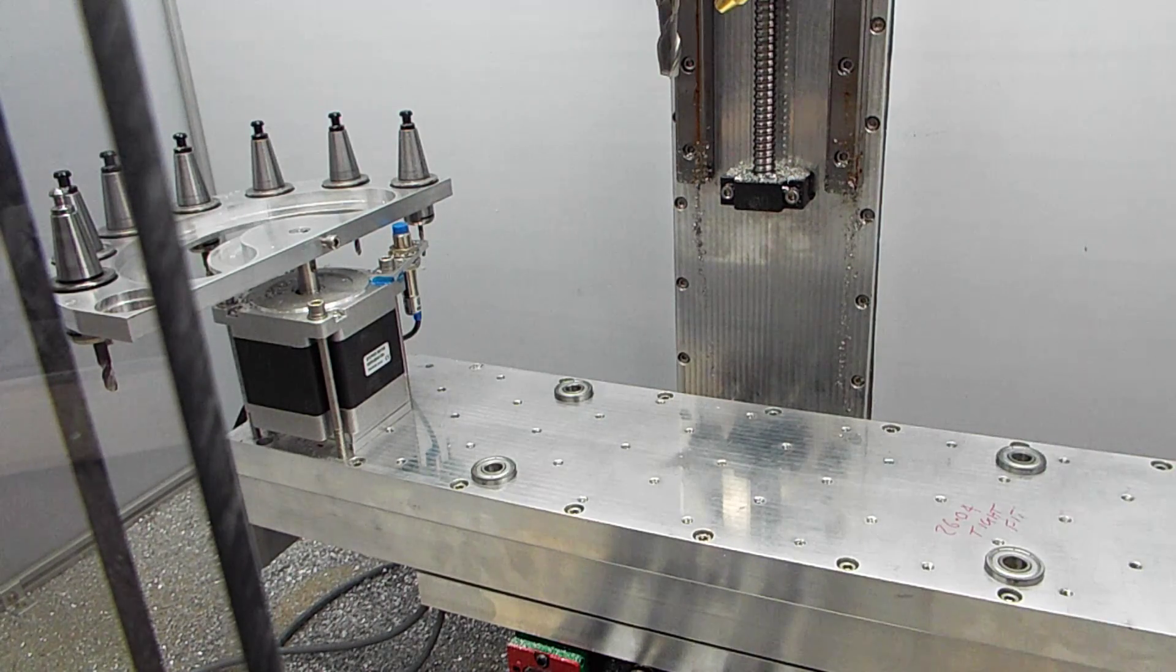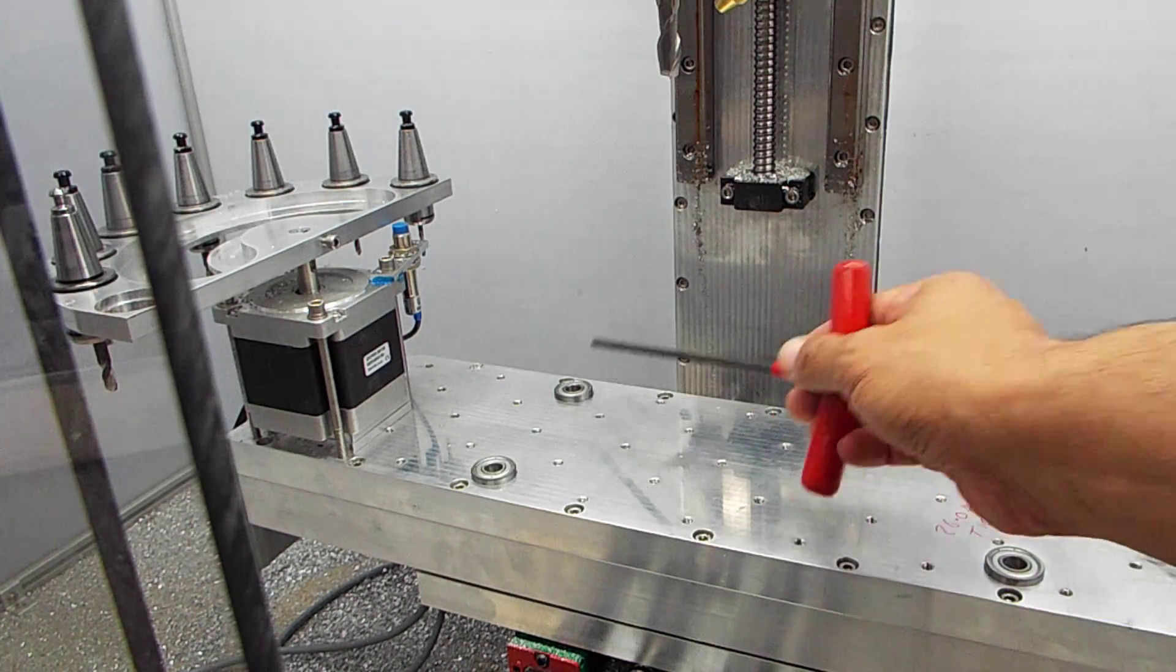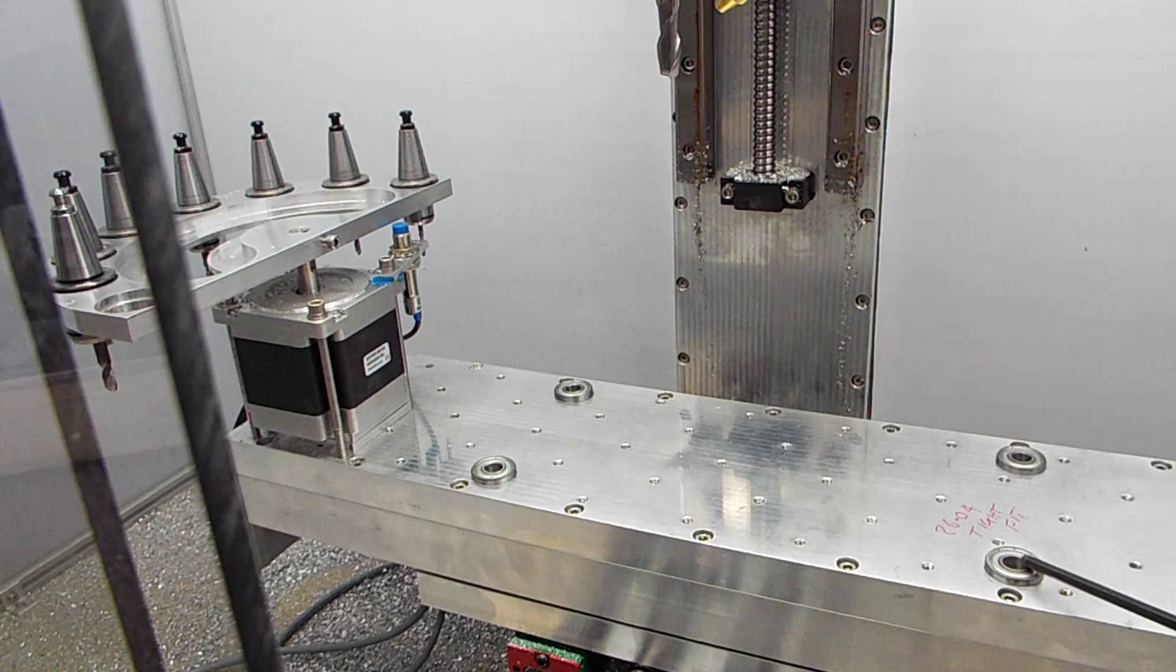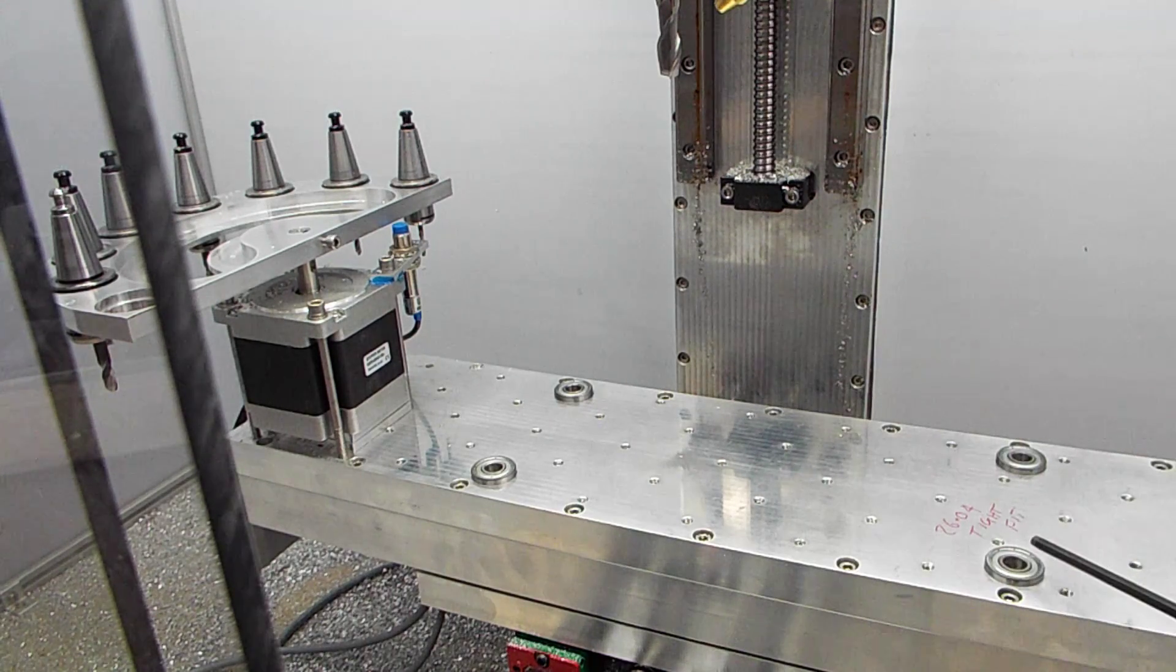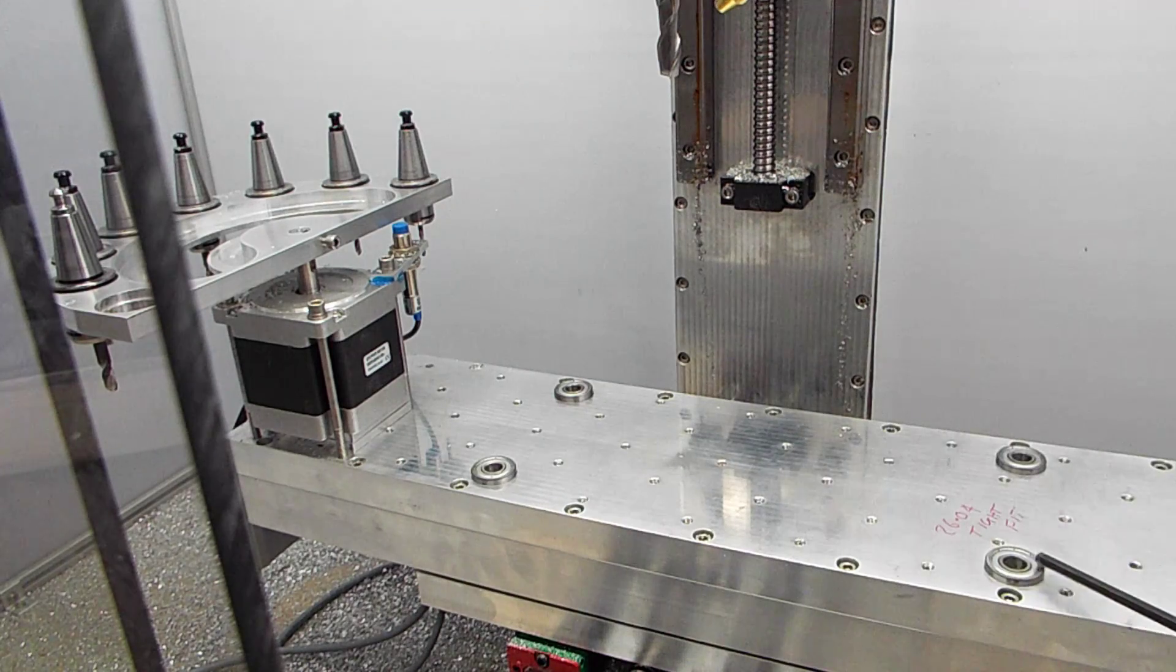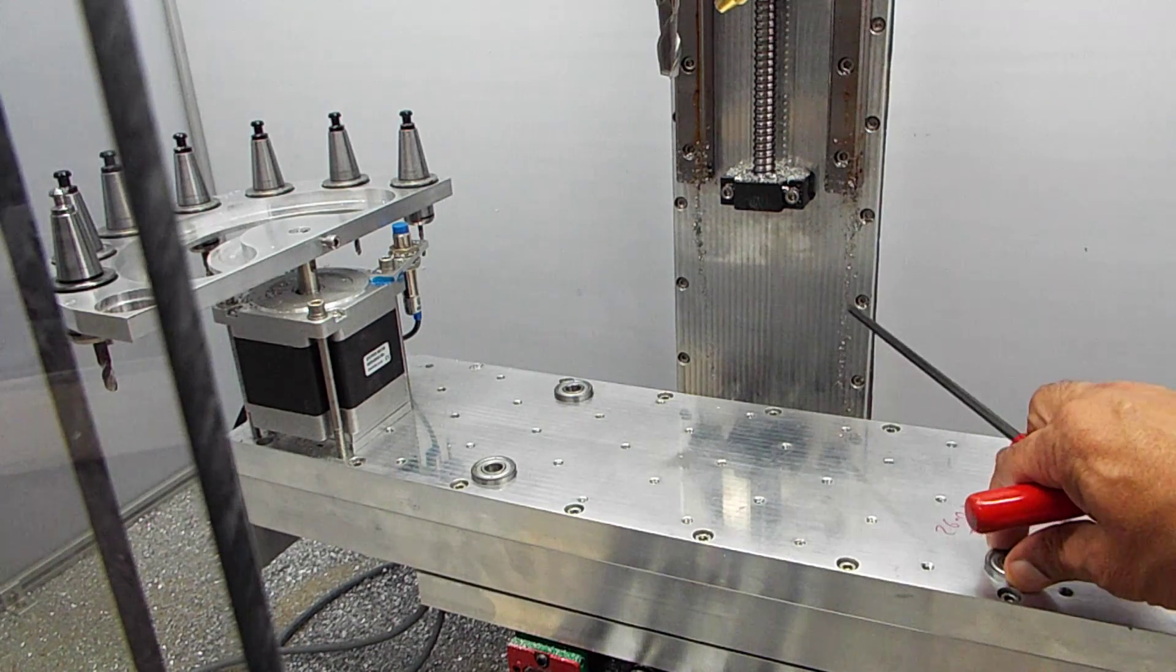What you can see on our production machines that we use at works is we've got four bearings here. Now these are offset so that you can only put the plate on in one direction, and these are an interference fit so they're locked in quite tight.